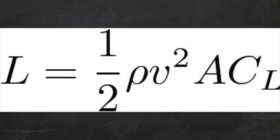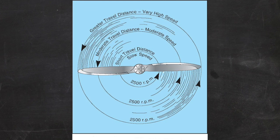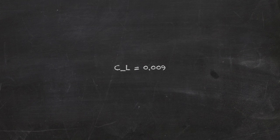C sub L is the lifting coefficient, a number that depends on the shape of a propeller and how it lifts something when exposed to wind. And for average propellers, this number sits at about 0.009.